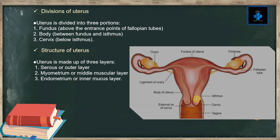In between the fundus and the isthmus, we can appreciate the body. The third division is the cervix, which can be located below the constriction or isthmus.